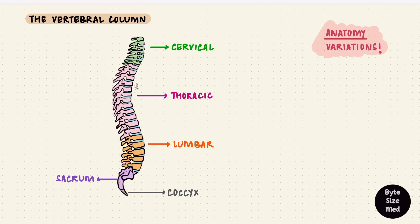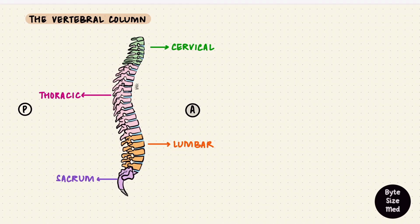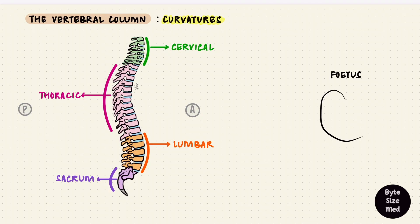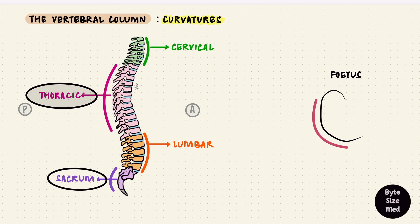Each region of the vertebral column curves in a different direction. The thoracic and sacral regions are convex posteriorly, while cervical and lumbar are convex anteriorly. During fetal life, the column is uniformly convex posteriorly. That's the first curvature, and it gets retained in the thoracic and sacral regions, making them primary curvatures.